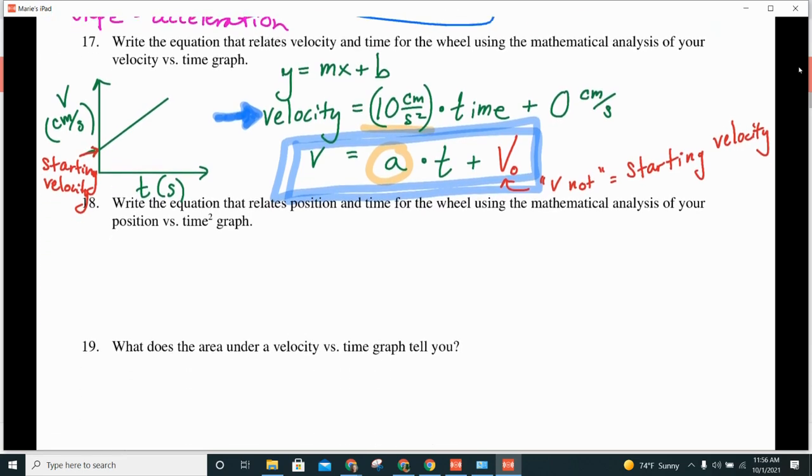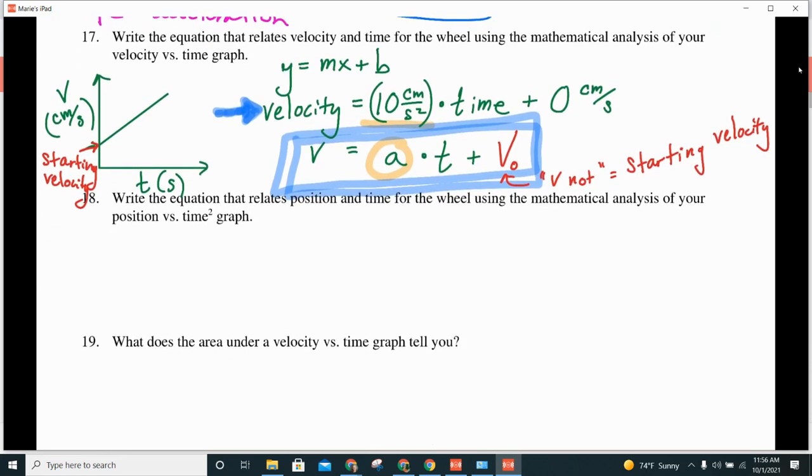Let's do this again for number 18. In number 18, we have a position versus time squared graph. Notice on my graph, I'm graphing time squared here. This is time squared. And if I square my times, that means that my units are also going to get squared. So, go ahead and check your graph. Did you do time squared and did you do seconds squared?